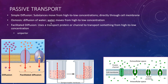Osmosis is the diffusion of water. Looking at this example, there's a beaker with two sides — this side has more molecules of whatever it is, and this side has less. Those molecules cannot get across this membrane, but water can. Initially there's less water on the side with more molecules, because those molecules take up space. So water moves down its concentration gradient from a higher concentration of water to a lower concentration of water — that's osmosis. Water moves from high concentration to low concentration.